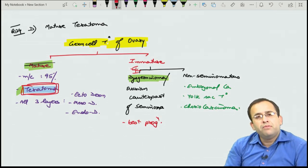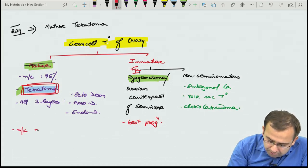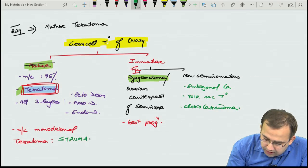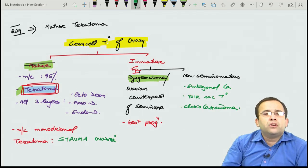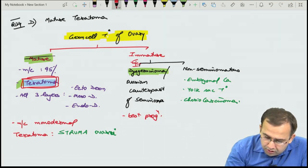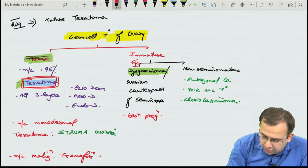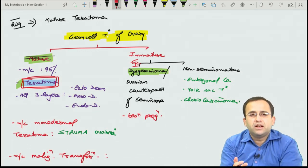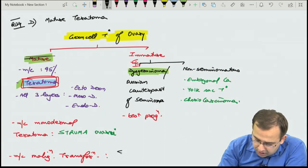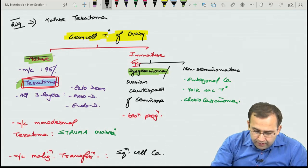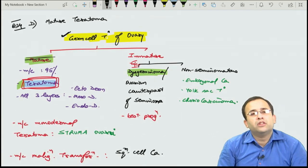Teratoma shows all three layers: ectoderm, mesoderm, endoderm. Most common monodermal teratoma (single layer only) is struma ovarii — showing presence of thyroid tissue in the ovary. Most common malignant transformation in teratoma is squamous cell carcinoma.